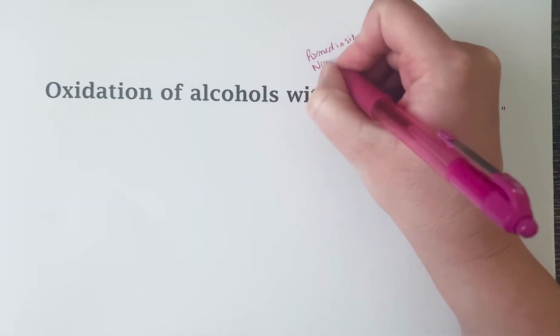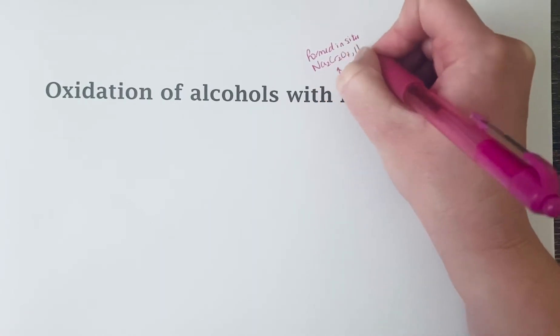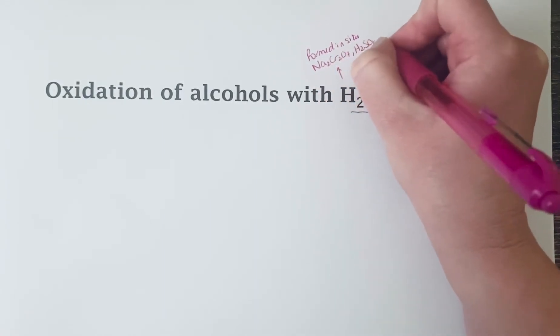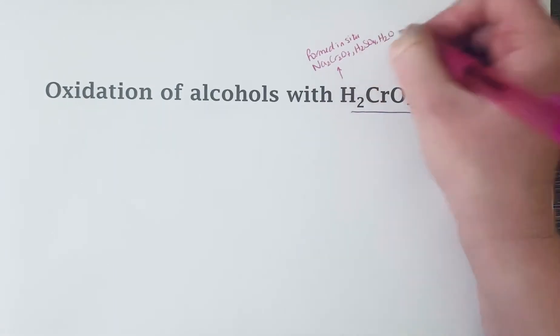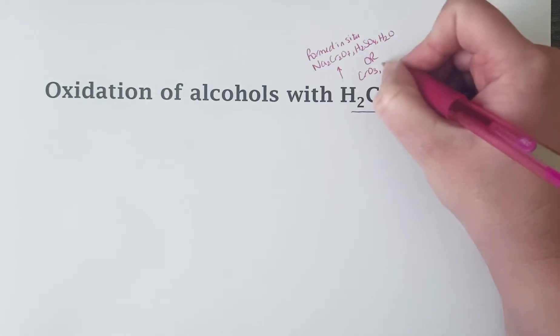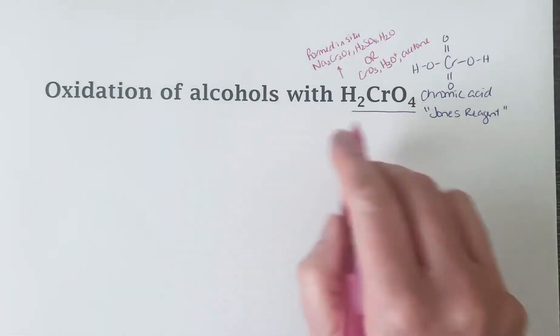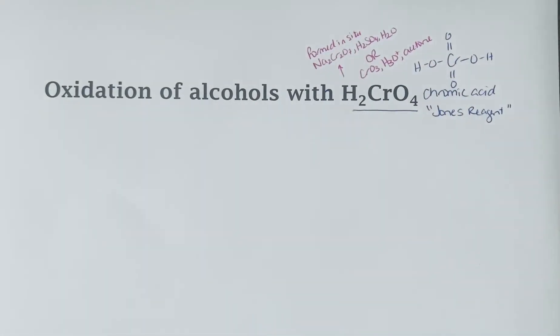So you will often see it formed by mixing sodium dichromate with sulfuric acid and water, or you might see chromium trioxide, aqueous acid, and acetone. But either one of these sets of conditions will form chromic acid in situ.